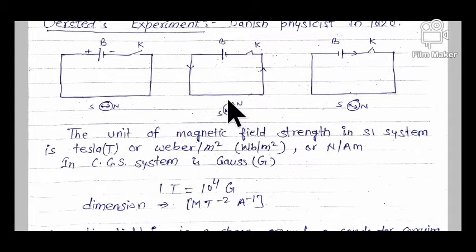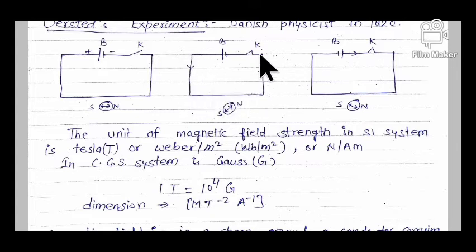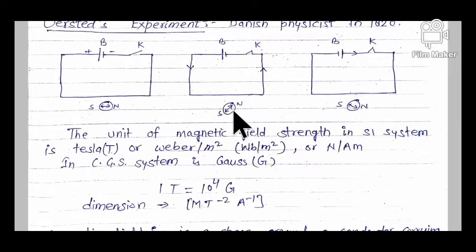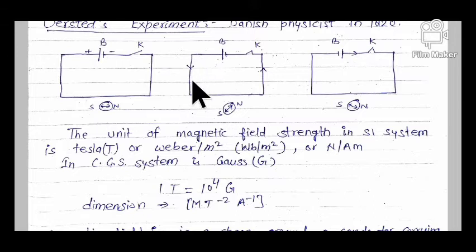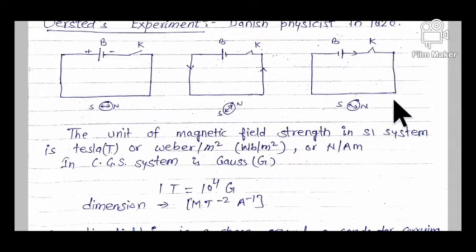जैसे ही key को close किया, compass में deflection आ गया। Key close करने पर wire में current flow होना शुरू हो गया, और wire के around magnetic field produce हो गया। Battery का sign change करने पर current anti-clockwise हो गया, तो deflection भी opposite हो जाता है।